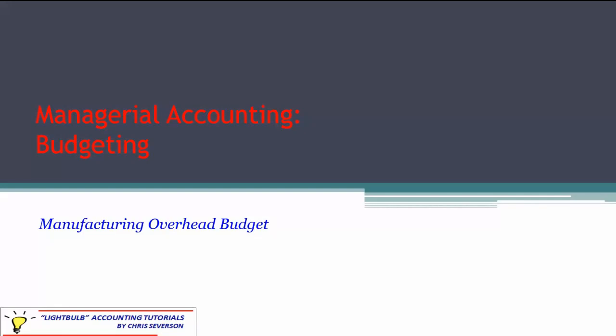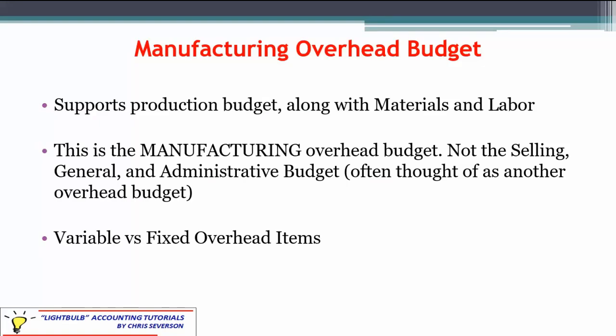Welcome to our discussion of the Manufacturing Overhead Budget. We're dealing with product-related manufacturing costs, but they're not direct materials and not direct labor — instead they're manufacturing overhead. This is another product costs budget. We've already done the sales budget and the production budget, and now we have three different costs needed to fulfill our production. We've already done materials and labor, and now we're dealing with the Manufacturing Overhead Budget, which is basically whatever's left.